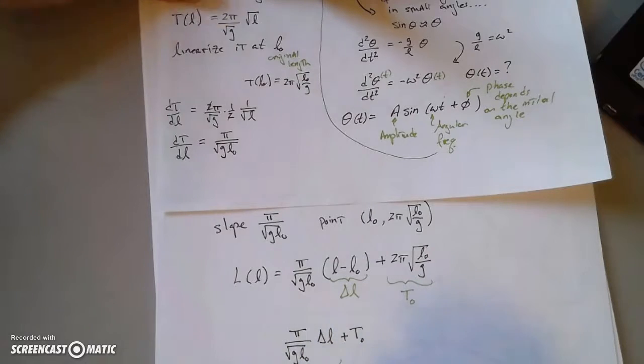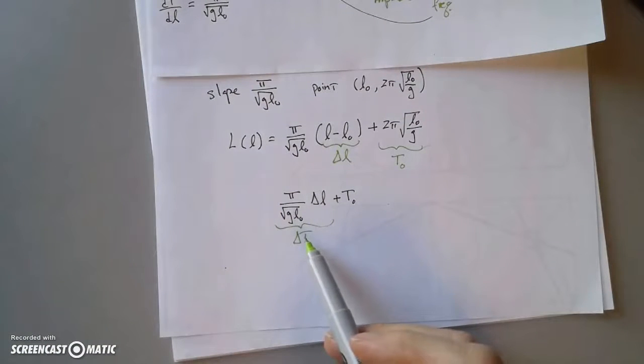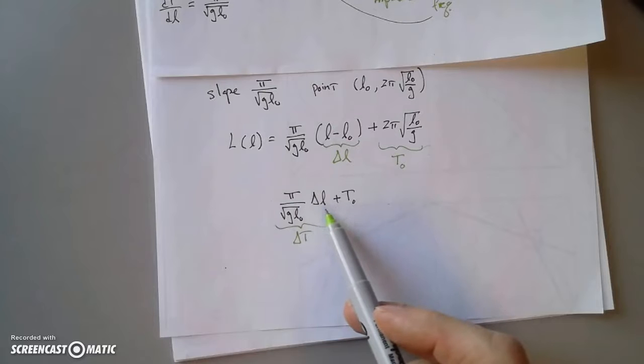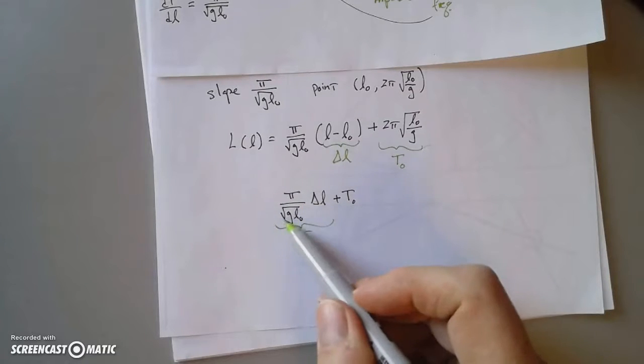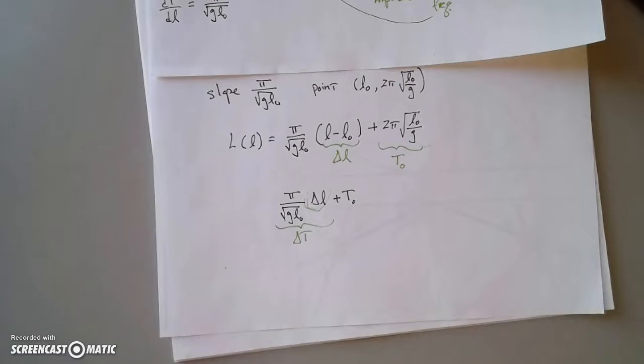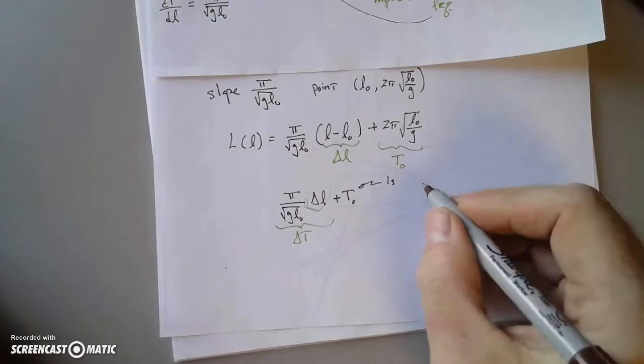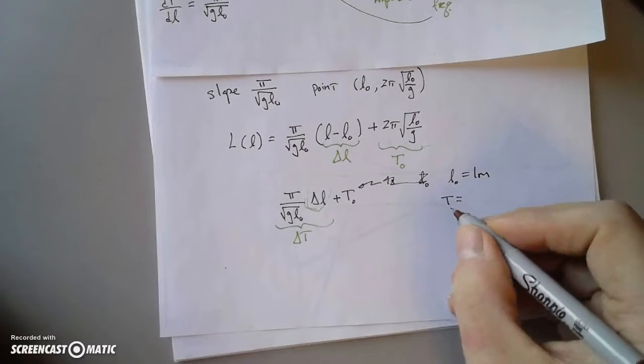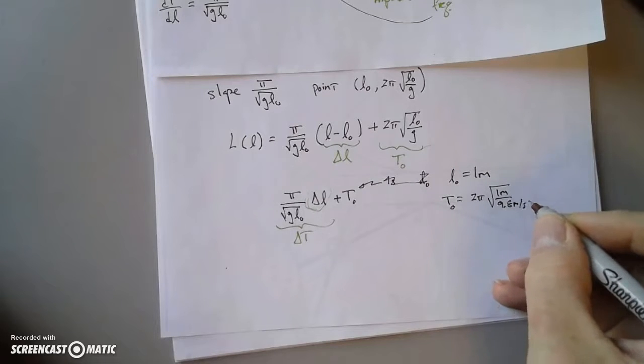So our slope is pi over root g L naught, and our point is L naught, which is the original length, times the original period. Well, our linearization as a function of length then is slope times length, as it differs from the original length, plus the original period. So we can even just call this T naught, the original period. And we can also just call this delta L, if you want the difference. And then we have pi over root g L naught times delta L plus T naught. So this is the change in period. So for small changes in L, we can calculate how the period changes depending on these things. g is 9.8, of course, you can just plug in the original length, and then you'll have a multiplicative factor, a constant, times whatever your change in length is, and that can tell you your change in period.